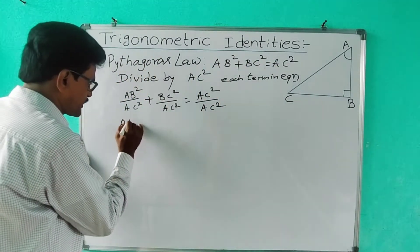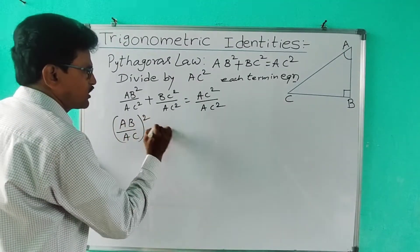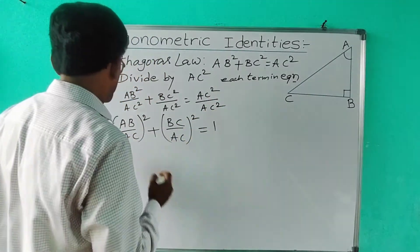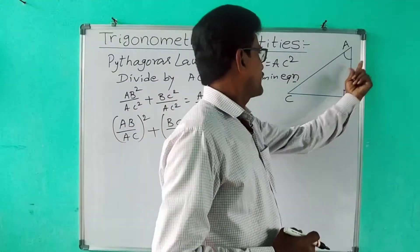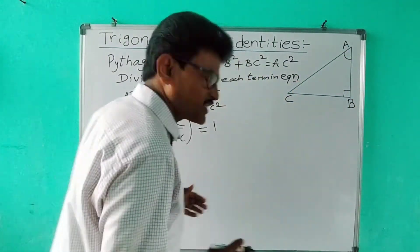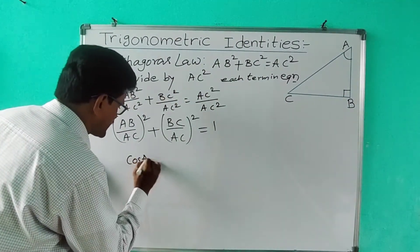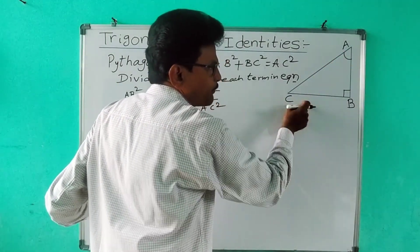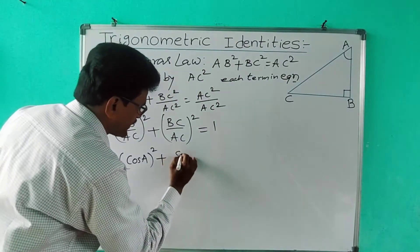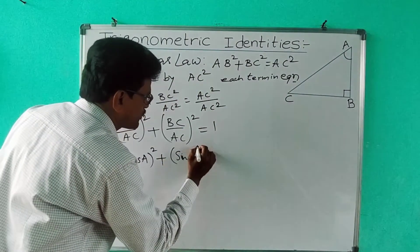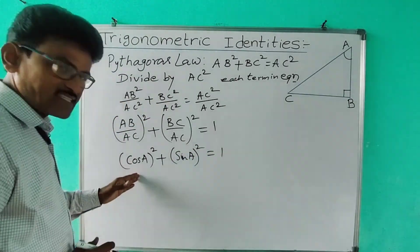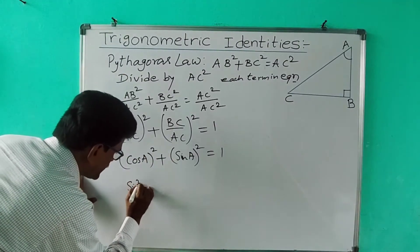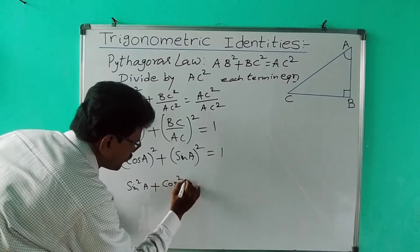This can be written as (AB/AC)² + (BC/AC)² = 1, since AC²/AC² = 1. Now, what is AB/AC with respect to angle A? AB is adjacent and AC is hypotenuse, so adjacent by hypotenuse is cos A. And BC/AC — BC is opposite and AC is hypotenuse — opposite by hypotenuse is sin A. So we get: cos²A + sin²A = 1, which gives us sin²A + cos²A = 1.